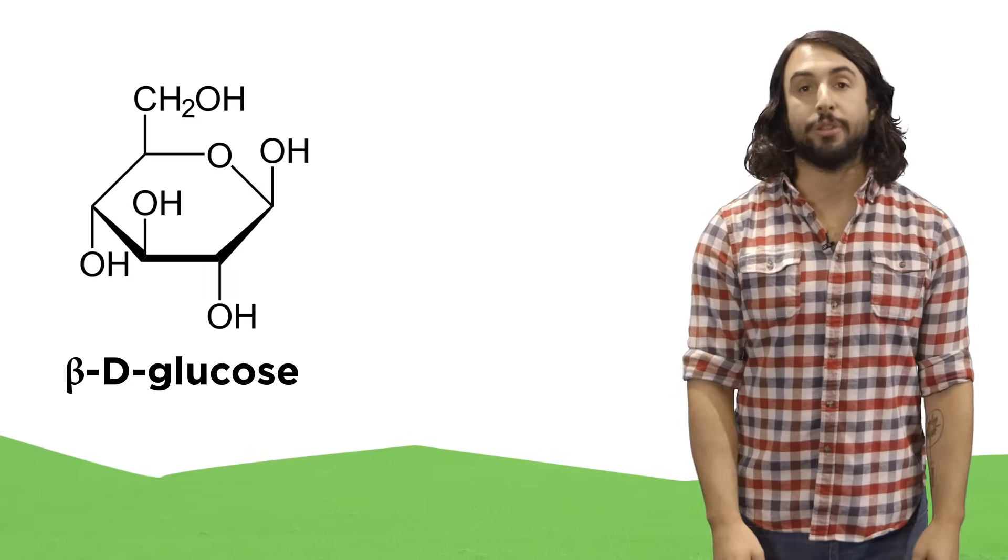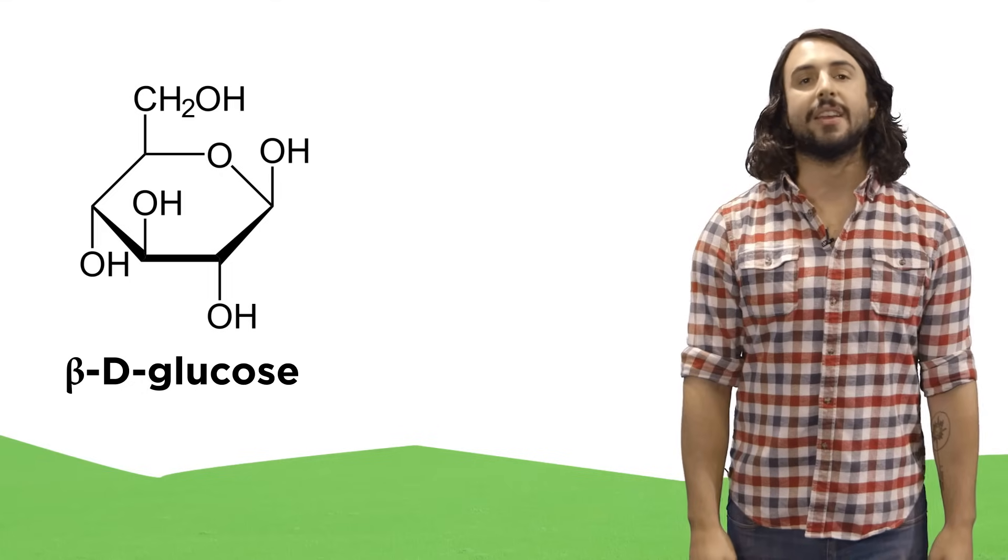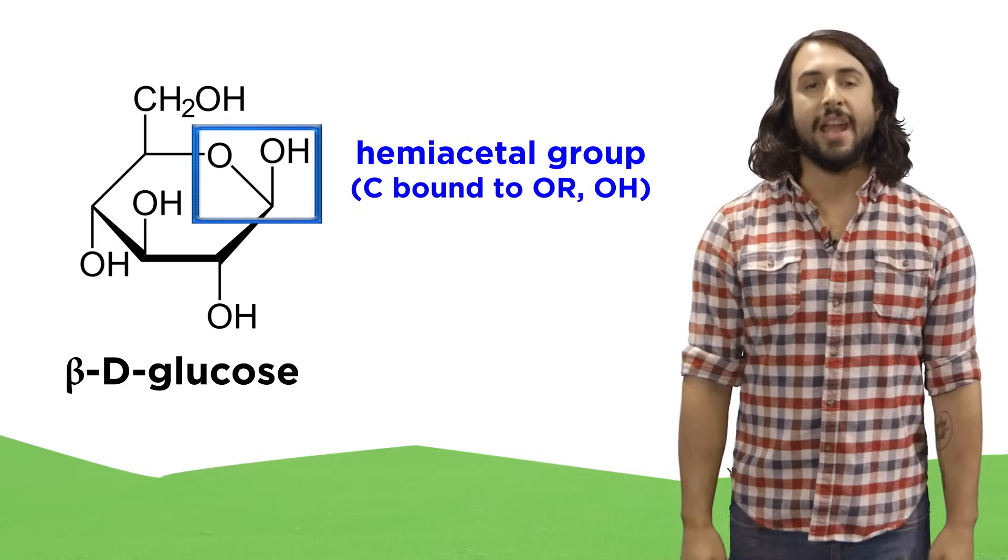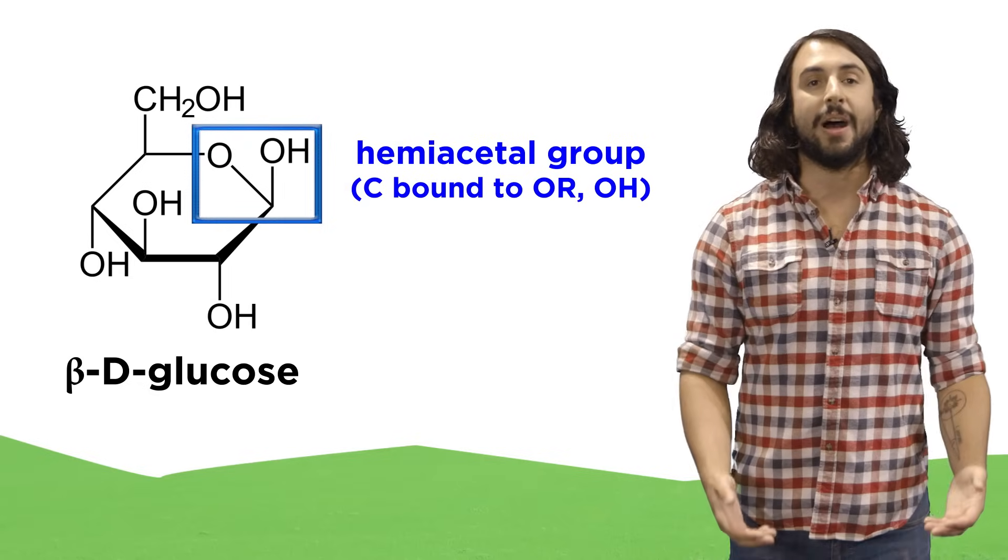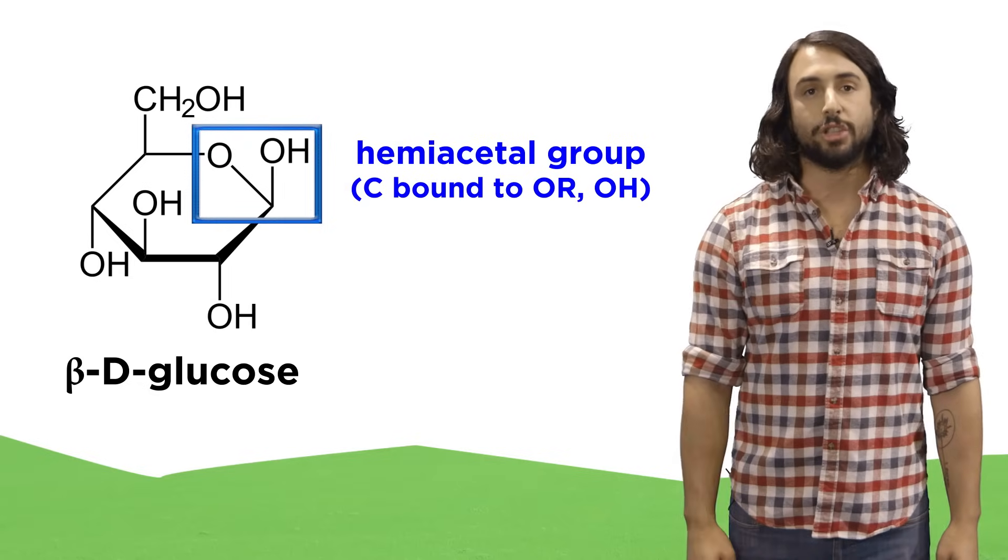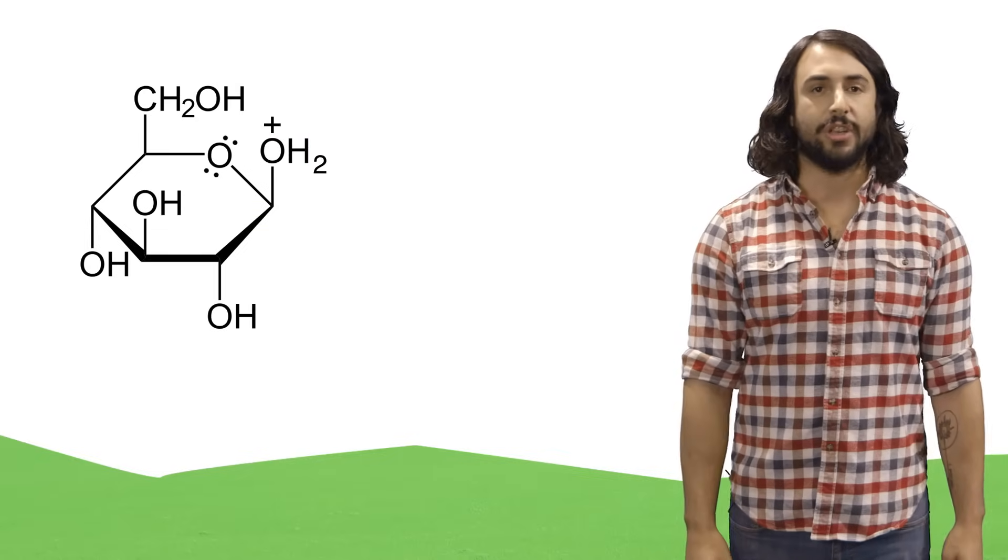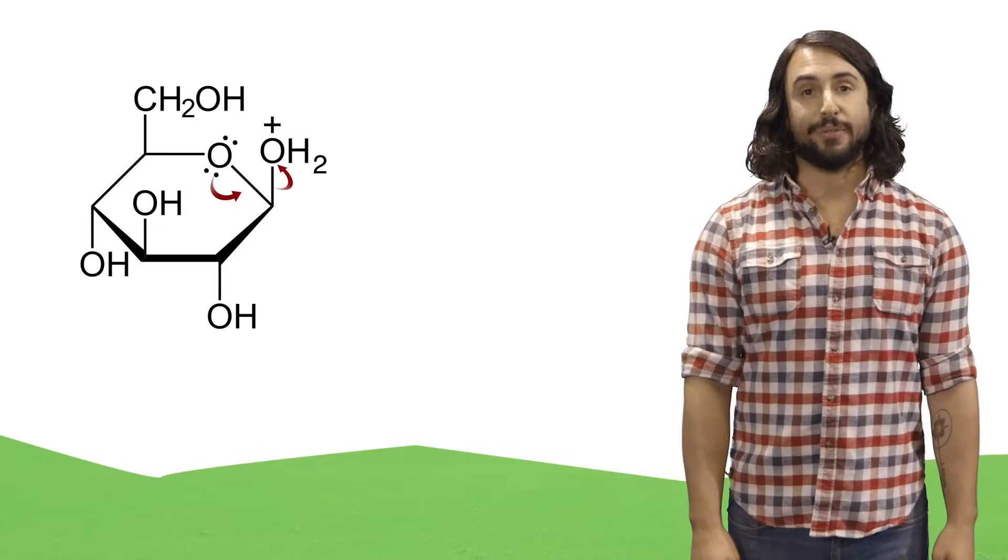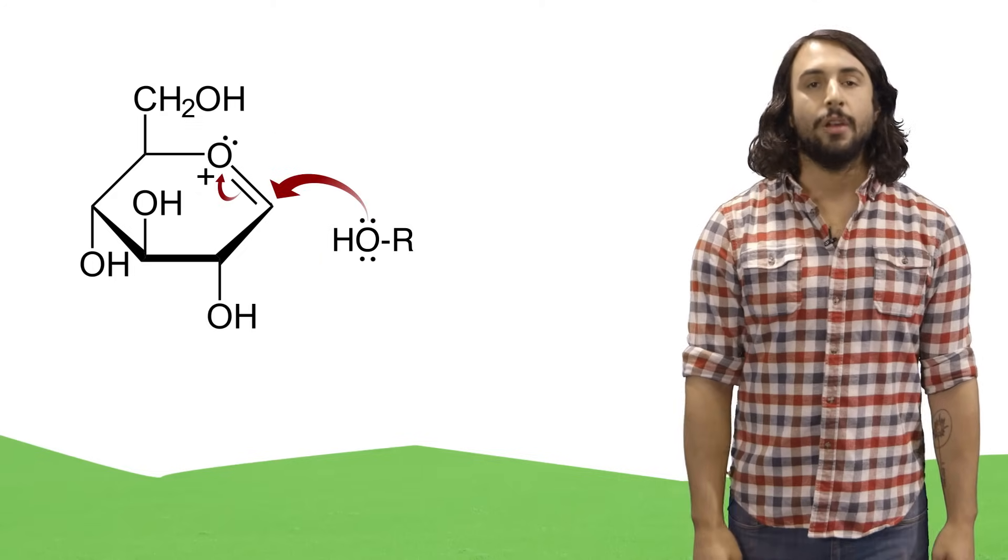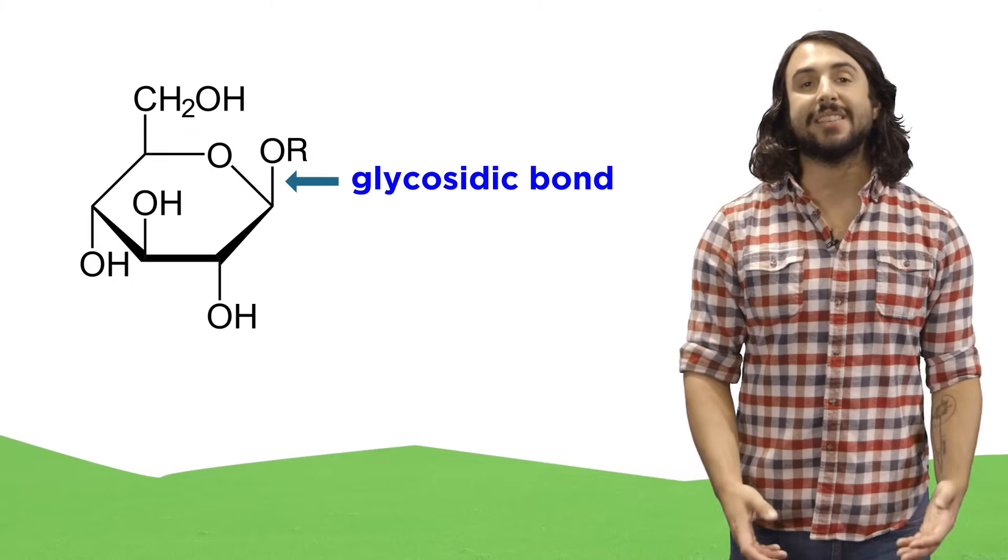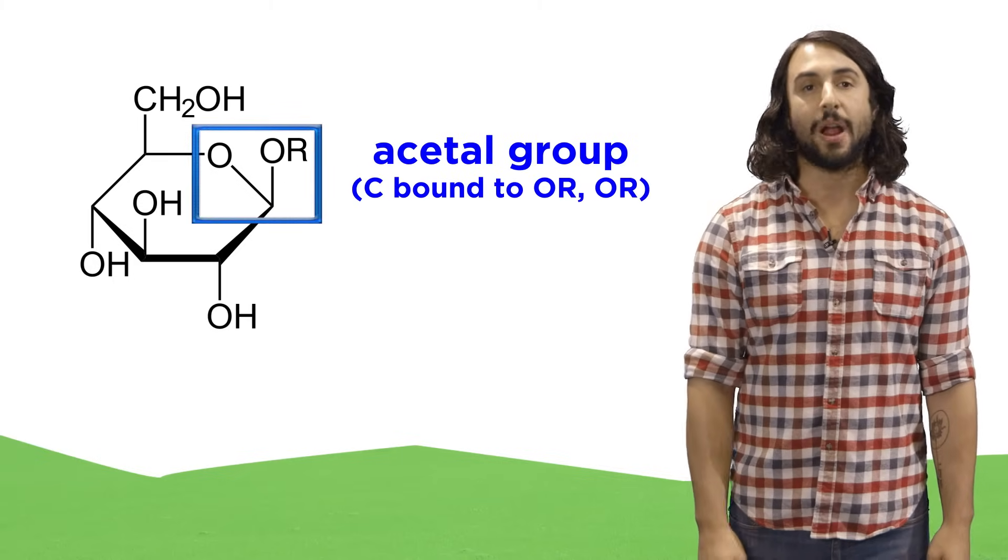First, let's return to our Hayworth projection for beta-glucose. In the cyclic form, we can see there is a hemiacetal group, and if we remember the mechanism by which a hemiacetal will become an acetal, that is essentially what will happen here. We know that if this hydroxyl is protonated, it could leave, and then this carbon could be attacked by an alcohol, forming what we call a glycosidic bond, as well as an acetal functional group in the process.